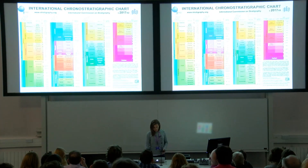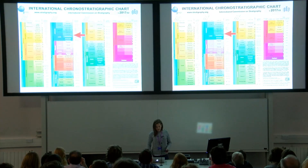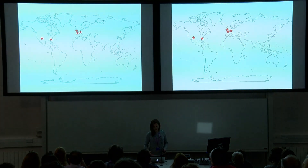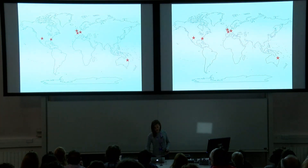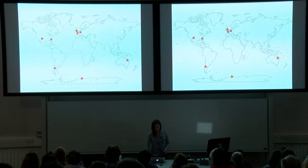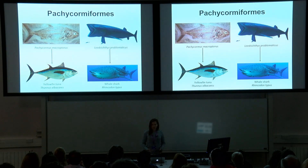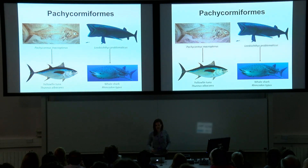They ranged from the Toarcian of the mid-Jurassic to the Maastrichtian of the late Cretaceous, and are known from deposits all around the world including Europe, North America, Australia, and most recently Antarctica. What makes pachycomiforms quite interesting as examples of stem teleosts is that they show a wide range of morphology and ecological diversity.